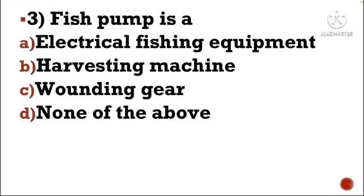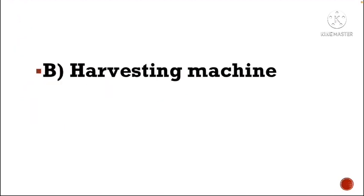Next question: Fish pump is a — Option A: electrical fishing equipment, Option B: harvesting machine, Option C: wounding gear, Option D: none of the above. The correct answer is Option B, harvesting machine.